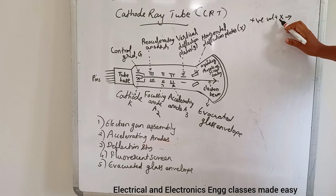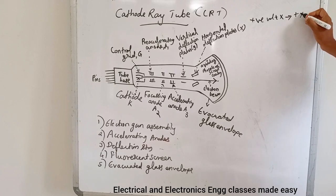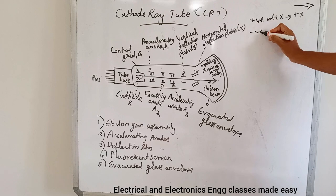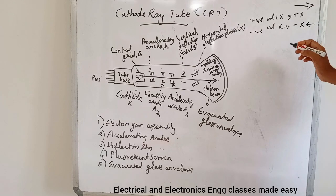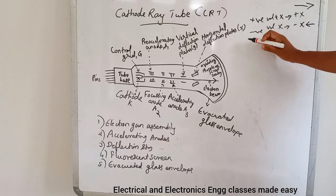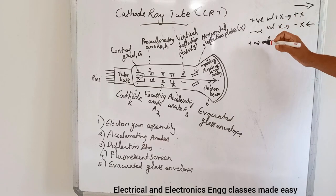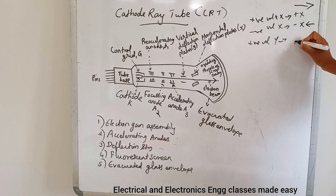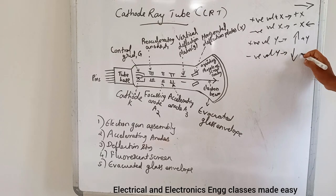If a positive voltage is applied to the X plate, the beam deflects towards the positive X axis. If a negative voltage is applied to the X plate, the beam deflects towards the minus X axis, that is to the left. If a positive voltage is applied to the Y plate, the beam deflects vertically upwards, that is the positive Y axis. Similarly, if a negative voltage is applied to the Y plate, the beam deflects downwards, that is the minus Y axis.